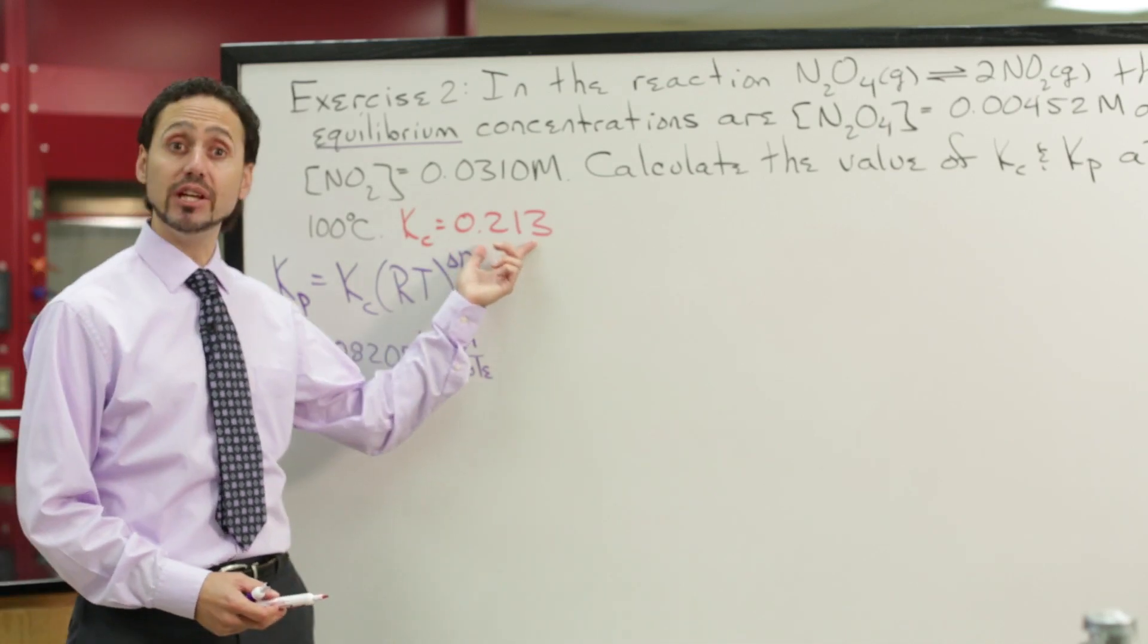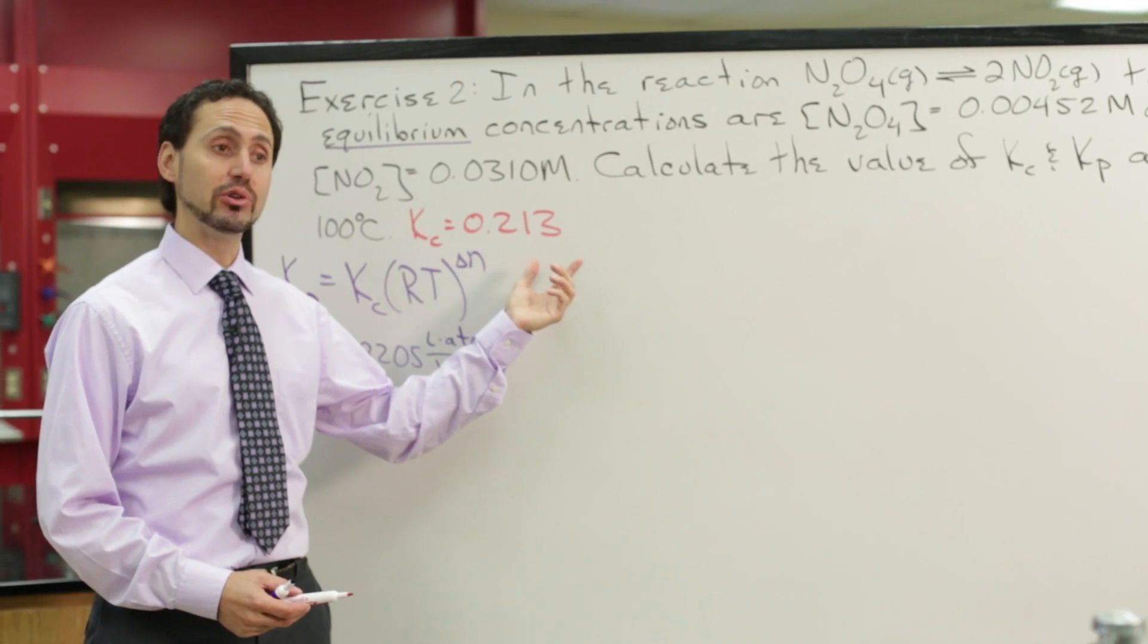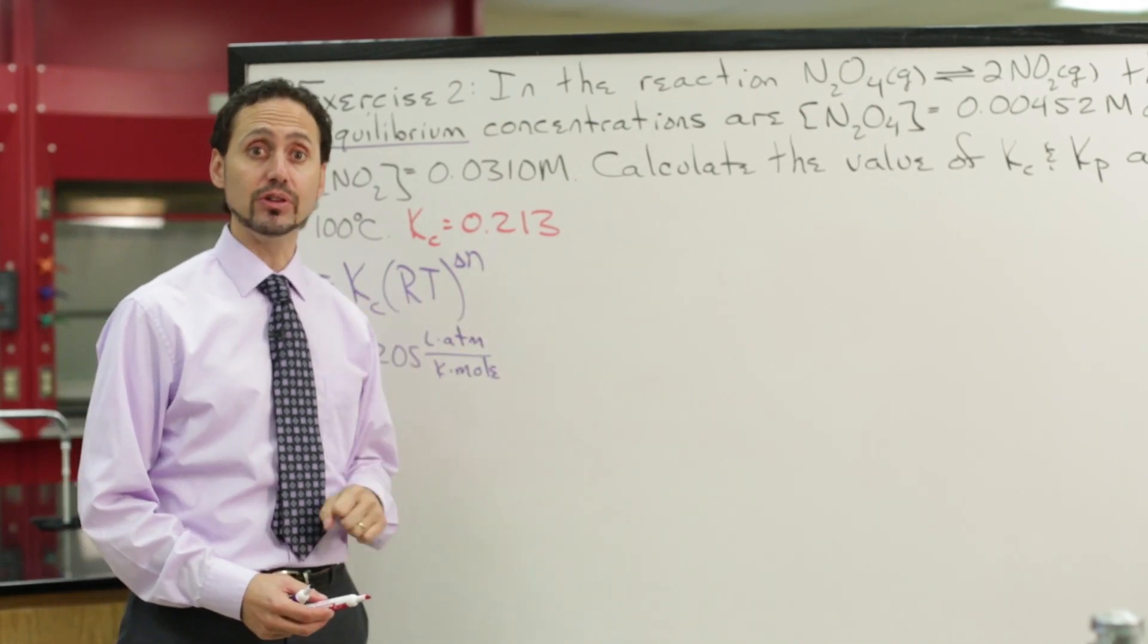Okay, so we found that k sub c equals 0.213 in the first part. Let's see what you found for k sub p value for the second answer.